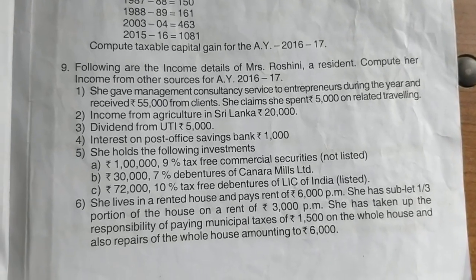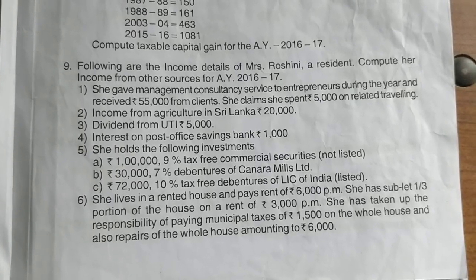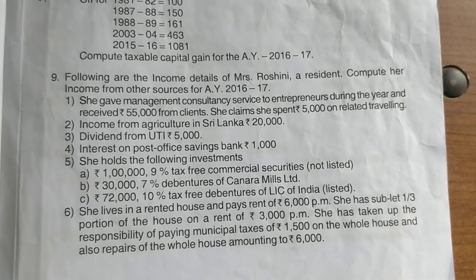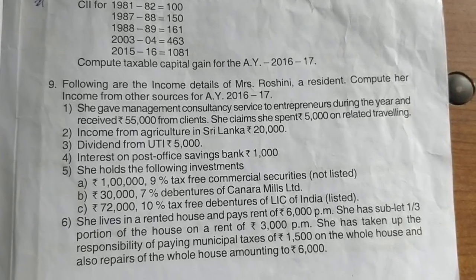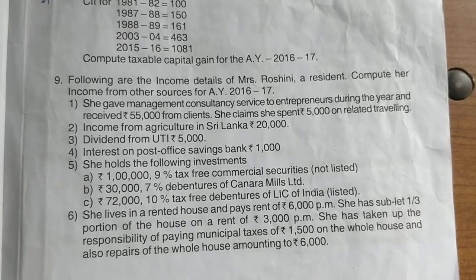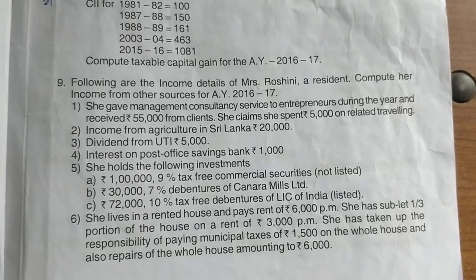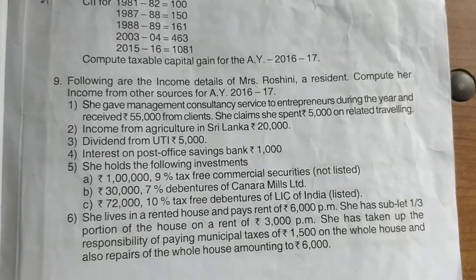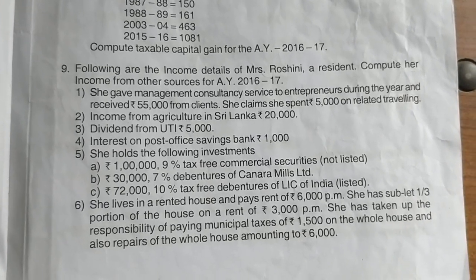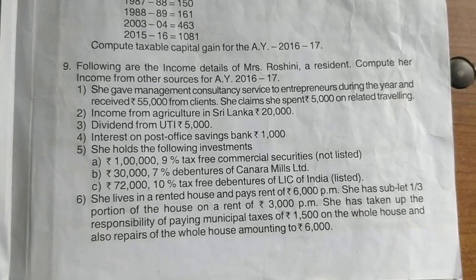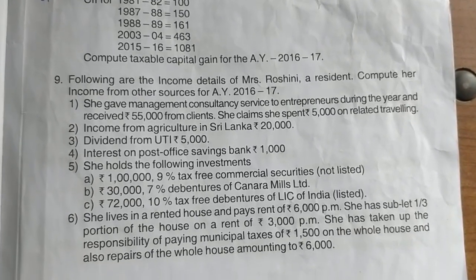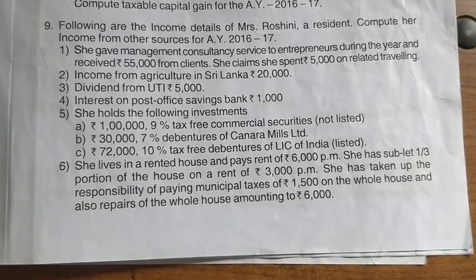72,000 rupees of 10% tax-free debentures of LIC India (listed). She lives in a rented house and pays rent of 6,000 per month. She has sublet one-third portion of the house at a rent of 3,000 per month. She has taken responsibility for paying municipal taxes of 1,500 on the whole house and repairs of the whole house amounting to 6,000 rupees. We need to calculate income from other sources.